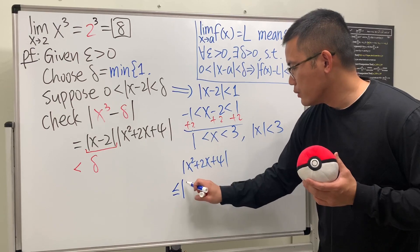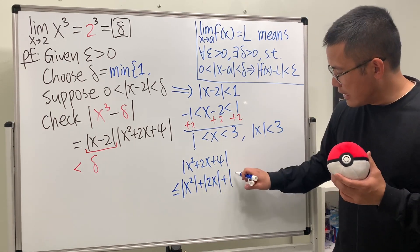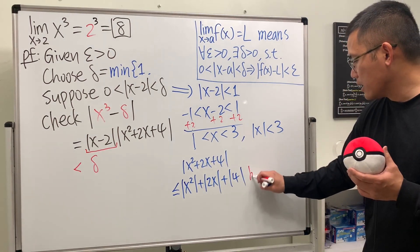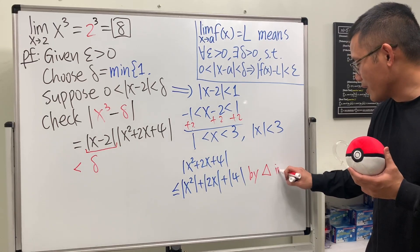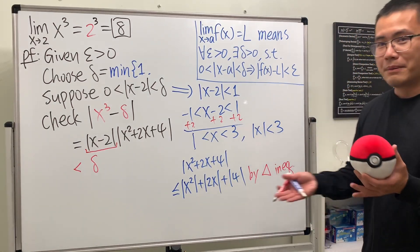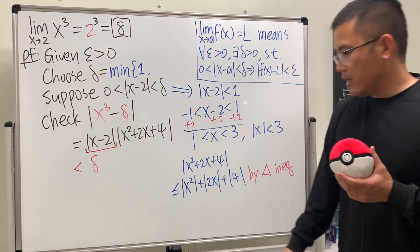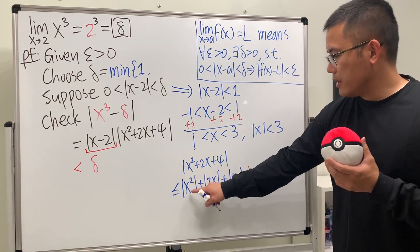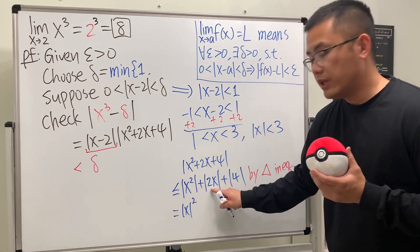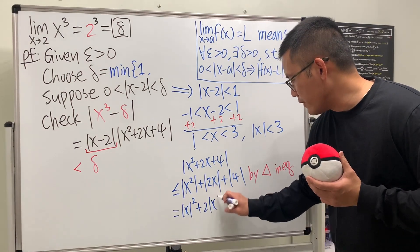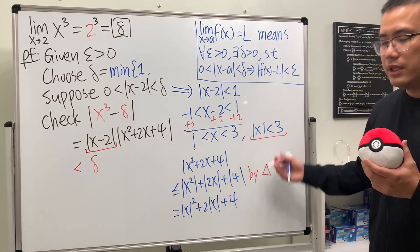Now we look at absolute value of x squared plus 2x plus 4 and apply the triangle inequality: this must be less than or equal to absolute value of x squared plus absolute value of 2x plus absolute value of 4. The triangle inequality is a super useful tool to keep in mind. We can rewrite absolute value of x squared as the absolute value of x, squared, and pull the 2 outside the second term.